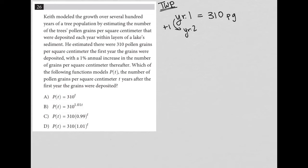And that year two number should be basically 310 plus 310 times 1%, which as a decimal is 0.01. If we put that into our calculator just to get a real number here, let's type that in. And what I get is 313.1, right? So 313.1 pollen grains.